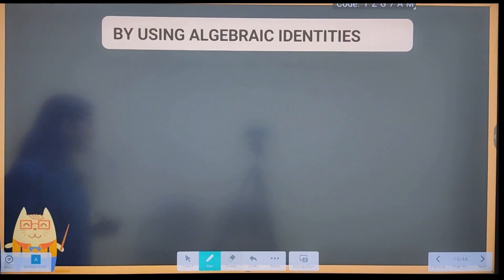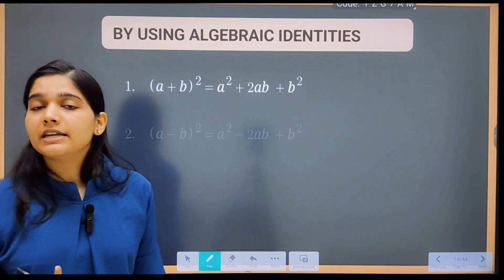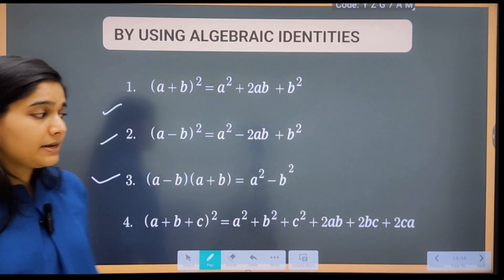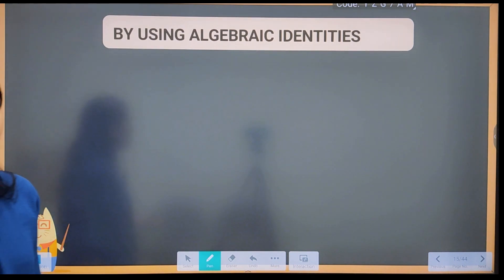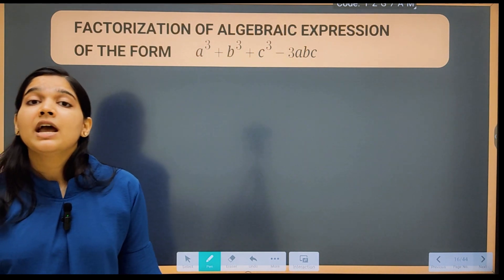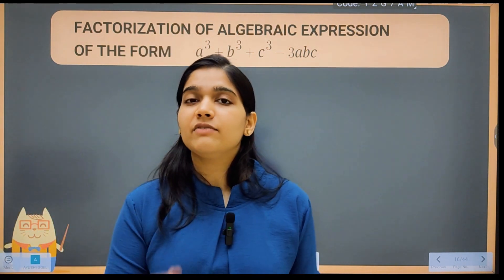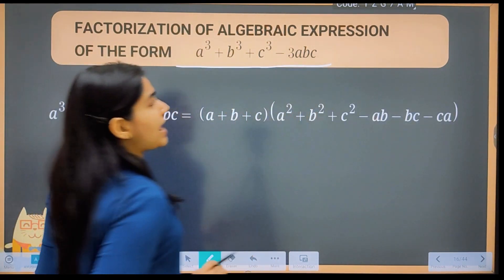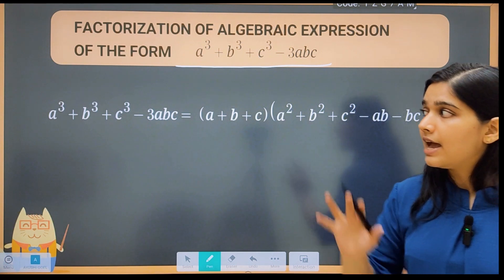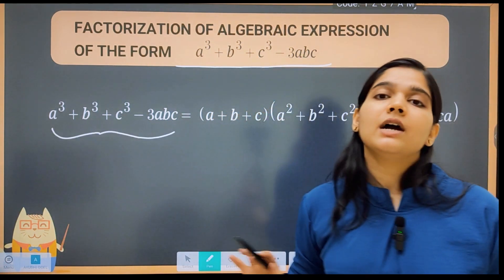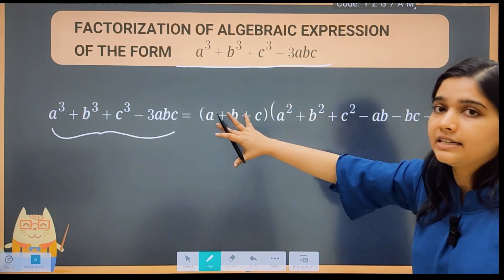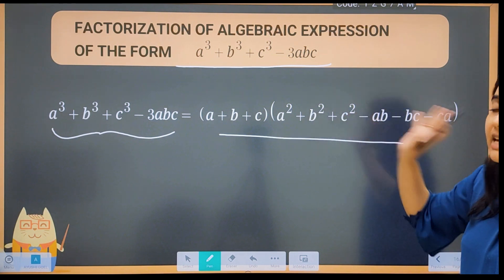Now let's see factorization using algebraic identities. We have square identities: (a+b)², (a−b)², a²−b², (a+b+c)², and cube identities: a³+b³, a³−b³, (a+b)³, (a−b)³, and one very important identity: a³+b³+c³ − 3abc. All these identities directly help us solve factorization problems. If an algebraic expression is given in one of these forms, we directly apply the matching identity to get the factorized form.